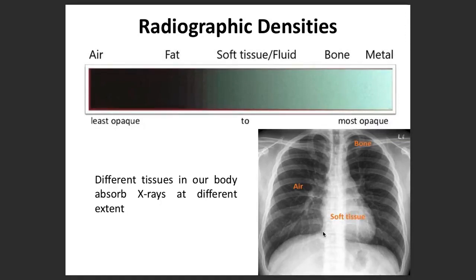There are technical aspects to assess, and I call it P-VERB. P stands for patient details. V is for the view — is it AP, PA, or lateral? Then comes E for exposure — is it adequately exposed or underexposed? R is for rotation. And finally B for breathe — is it an inspiration film or an expiration film?